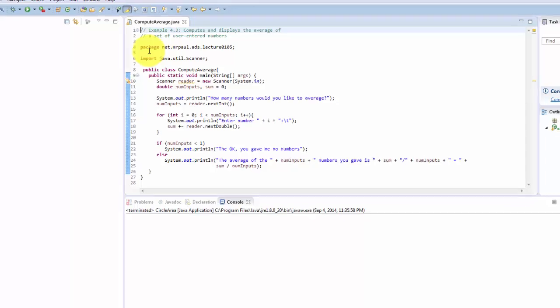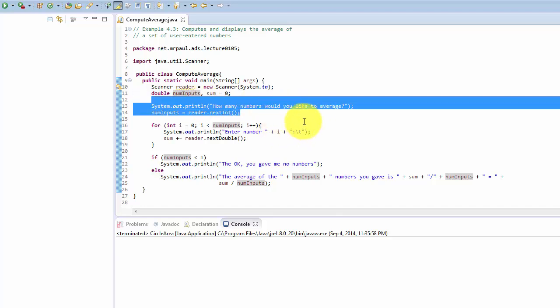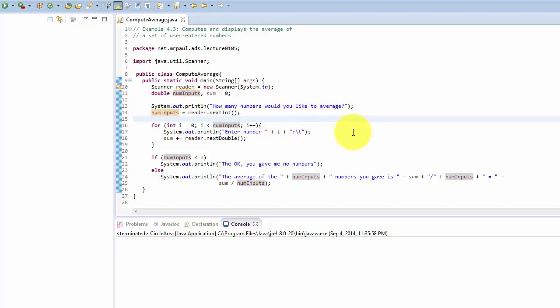Here is a program called Compute Average. The purpose of this program is to ask a user how many numbers they would like to average, then to have the user enter each of those numbers one by one, and then to generate and print the average of those numbers. Pretty straightforward. We import scanner, make a new scanner object, declare a couple of variables. One is going to hold the number of inputs, one is going to hold a running sum of the numbers that the user has typed so far. We prompt the user for how many inputs they'd like to enter.